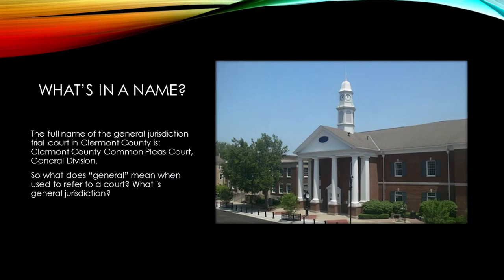We tend to think of a court as a building — 'I'm going to court' — like 'I'm going to the theater or I'm going to the hospital.' But a court is really an institution. It's a civic entity that performs a specific civic function. The court is located in this handsome building on East Main Street. The technical name for the Common Pleas Court is the General Division.